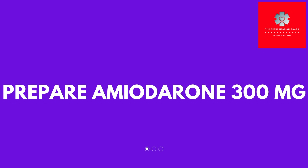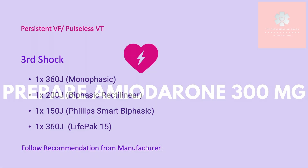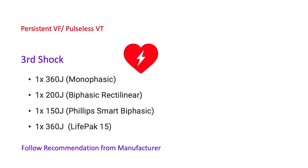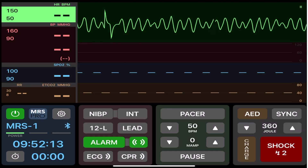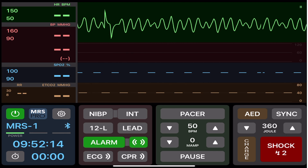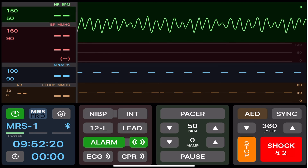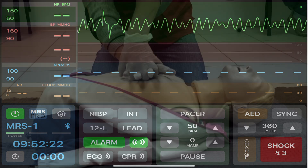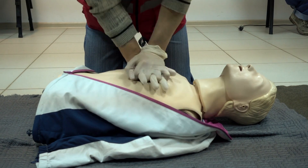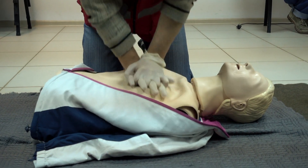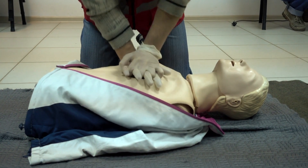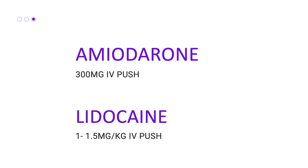Continue. At the two-minute mark, stop CPR, switch roles, and analyze. If it's still VF, deliver defibrillation number three — follow the recommendation from the manufacturer — and immediately resume high quality CPR. At this time, give amiodarone: the dose is 300 milligrams IV push.